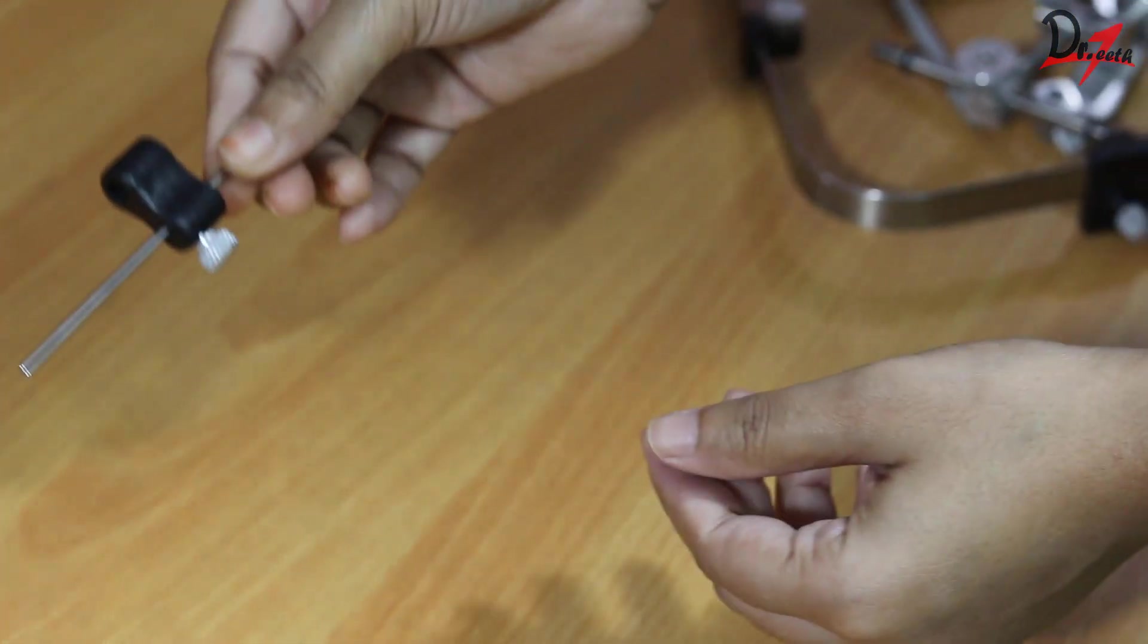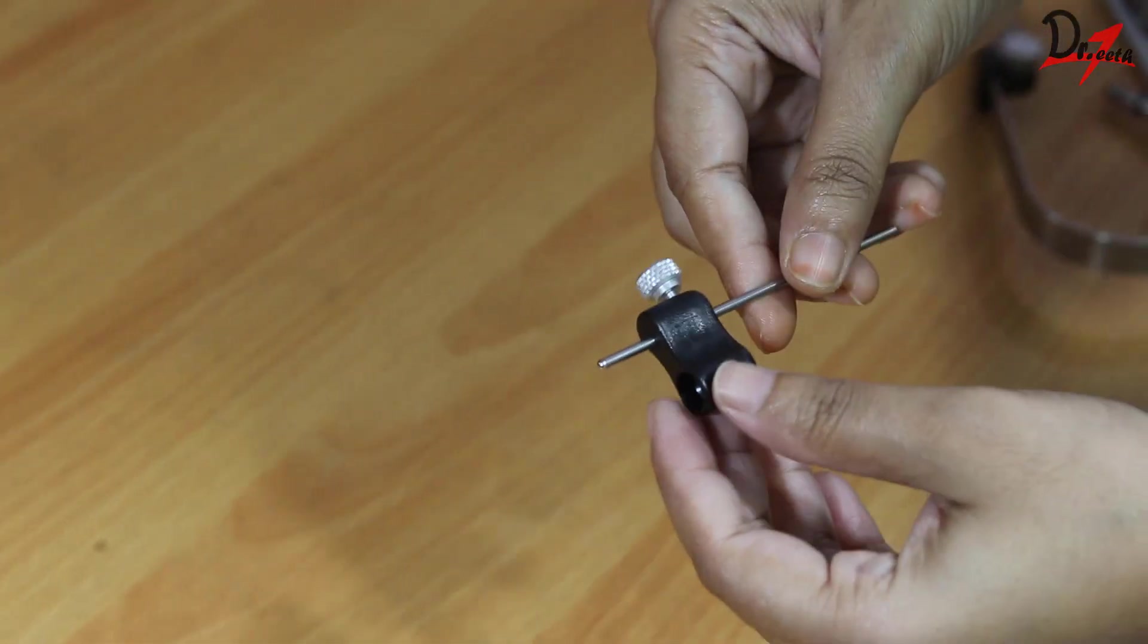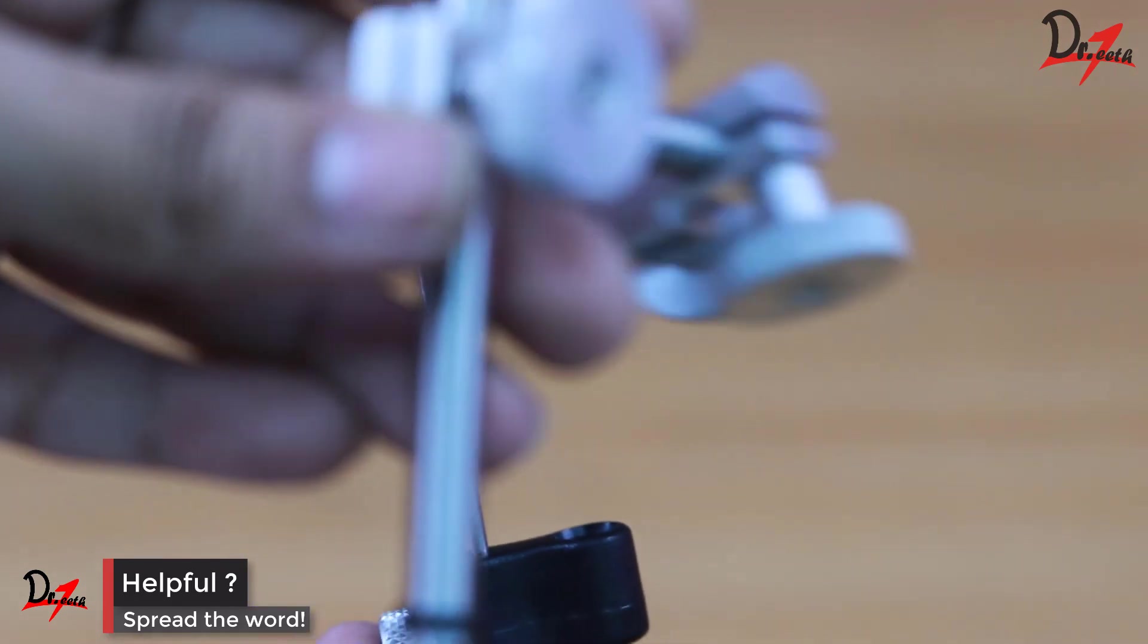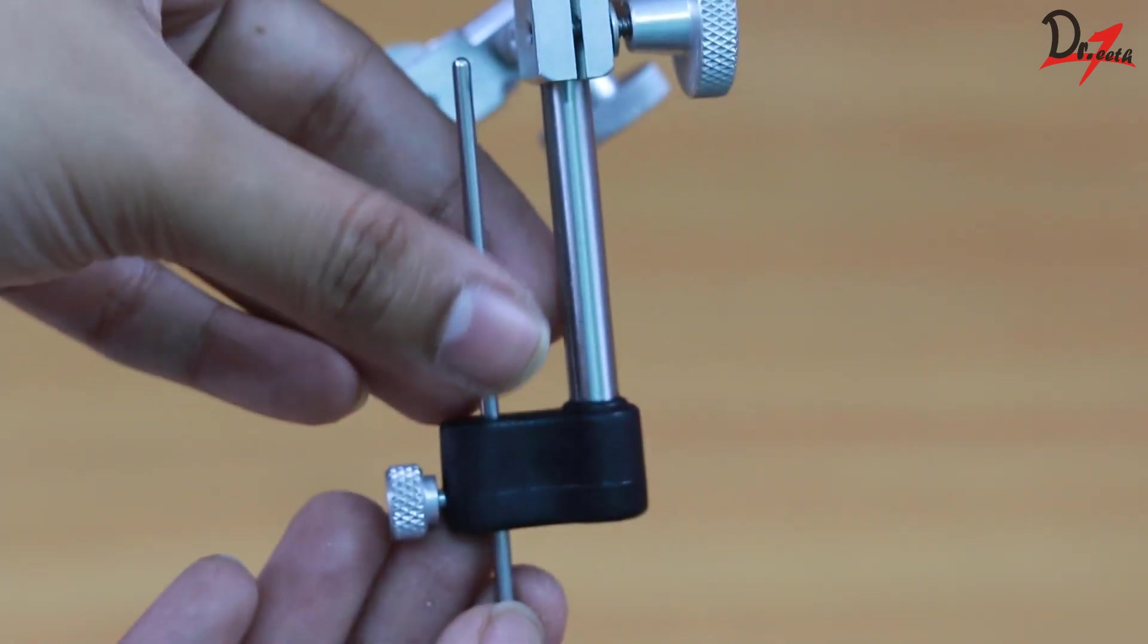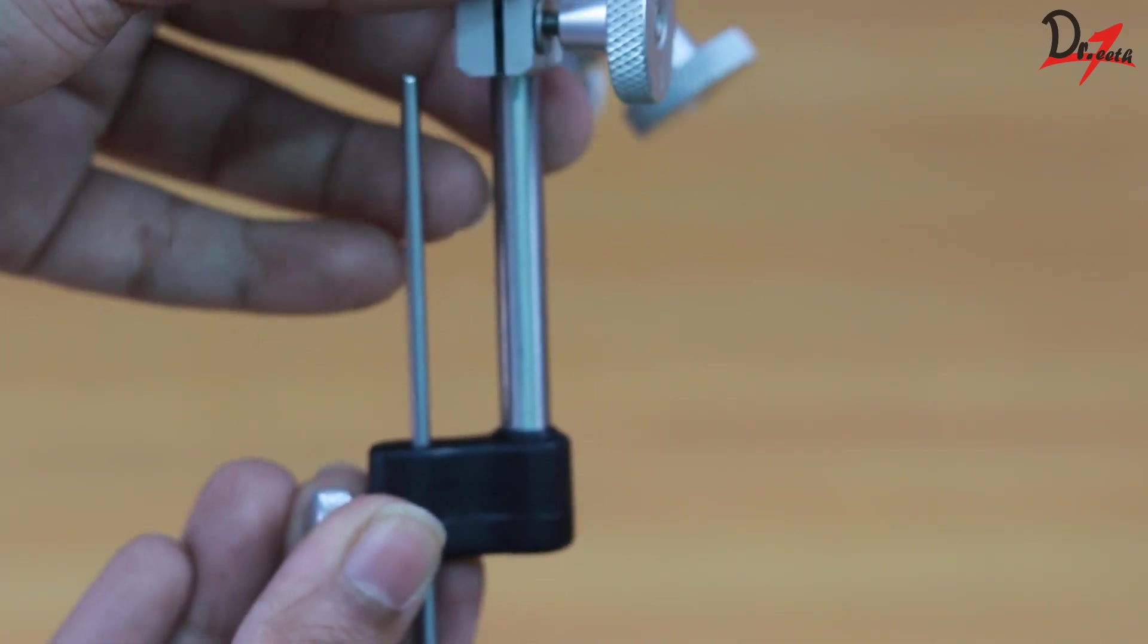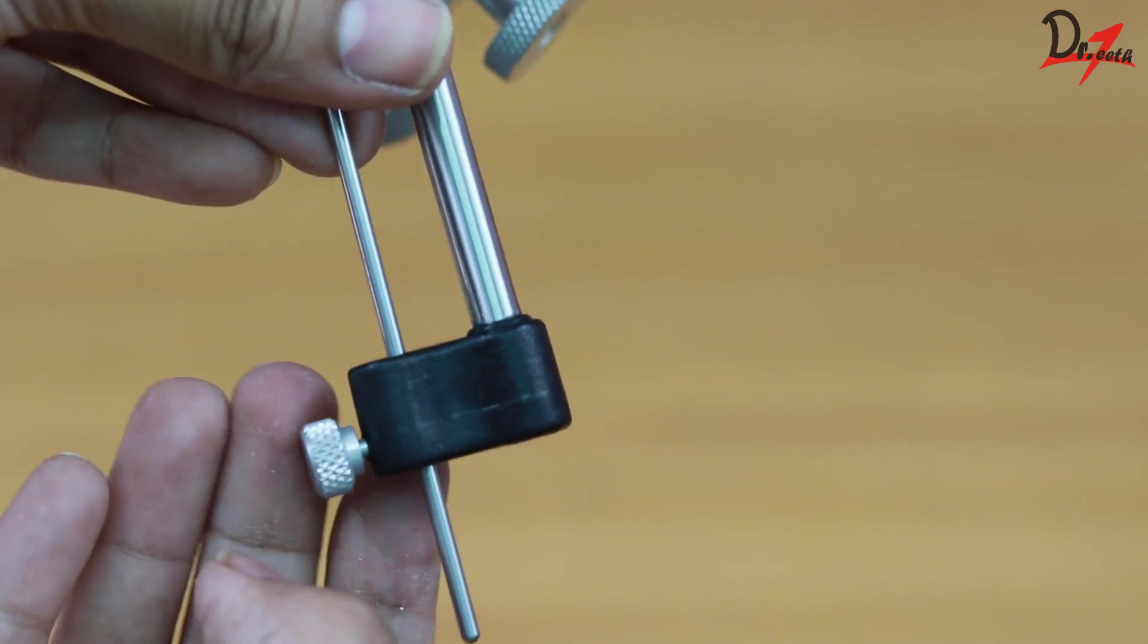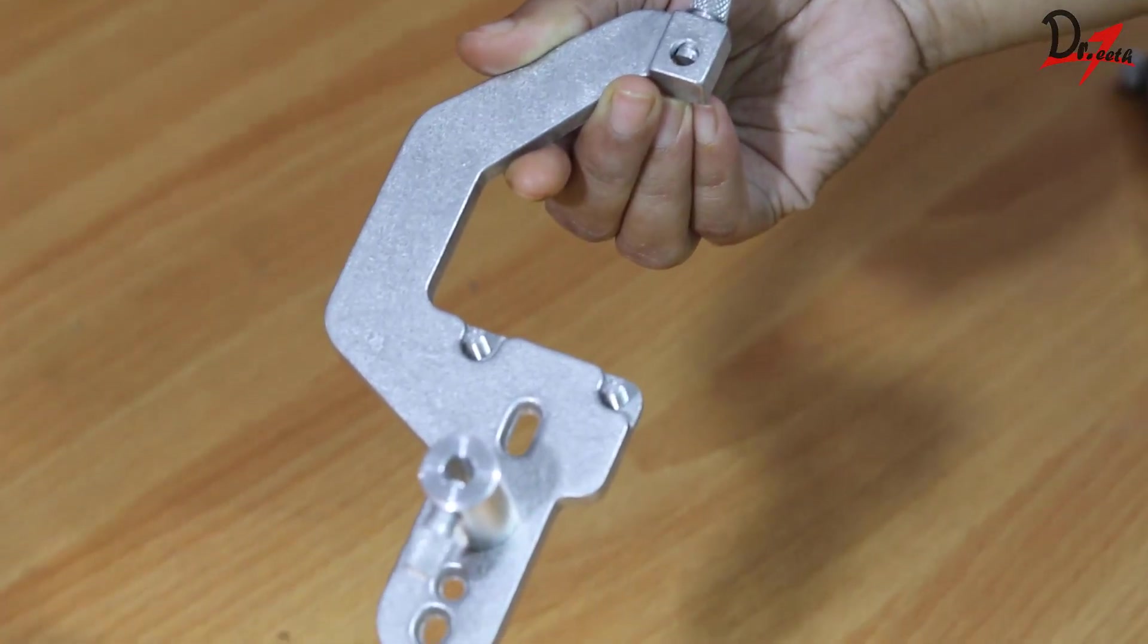Then we have this transfer assembly rod. So after we're done with the face bow record, we have to transfer it to the articulator. So this transfer assembly rod will be attached to the locking device, and this will help to stabilize the assembly while we articulate. We also have one more method of transferring the face bow record to the articulator, and that is by using the mounting platform.